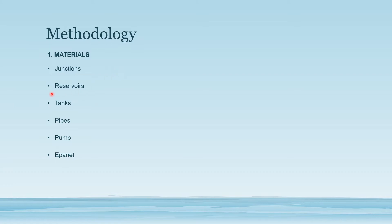Then we have reservoirs. Reservoirs are nodes that represent water sources such as lakes, rivers, and groundwater aquifers. The input data required for the reservoir in this study is hydraulic head. Then we have water tanks. Water tanks are used to store water and the input properties for tanks include bottom elevation, diameter, initial and maximum water level, and the output property is the hydraulic head.